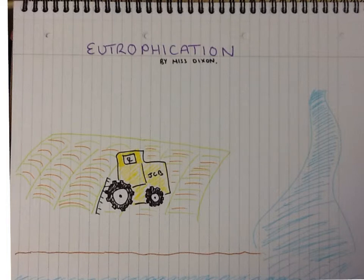Today we're going to be talking about eutrophication. Eutrophication is a process where massive amounts of nutrients in excess enter water bodies, usually nearby farms.